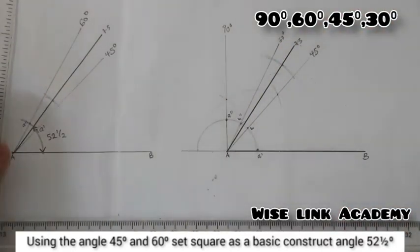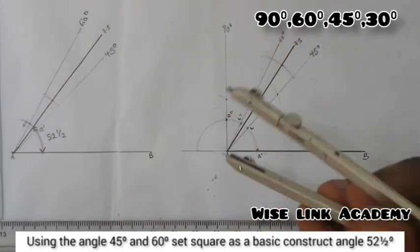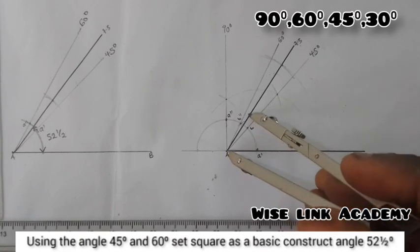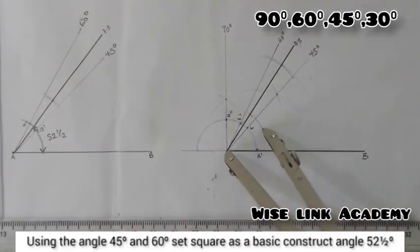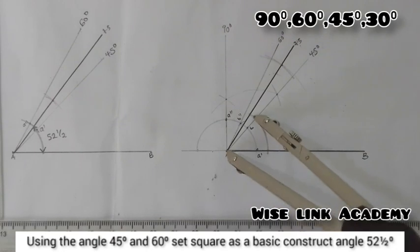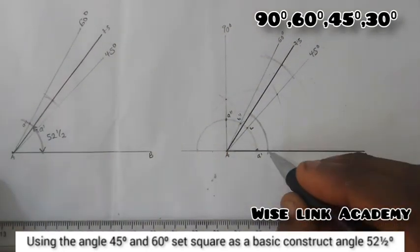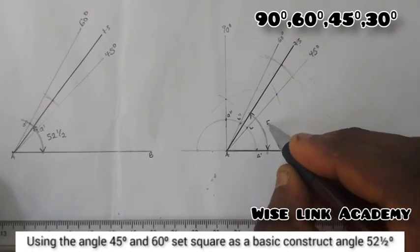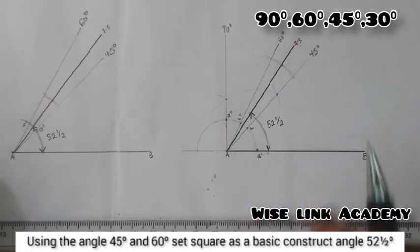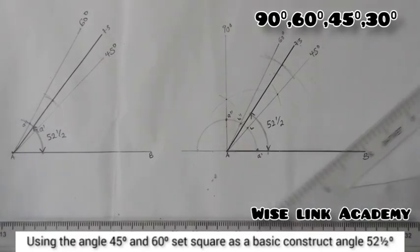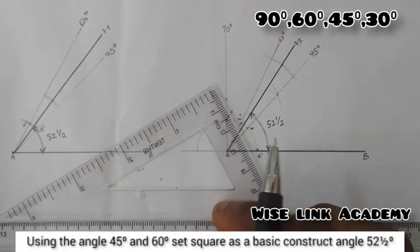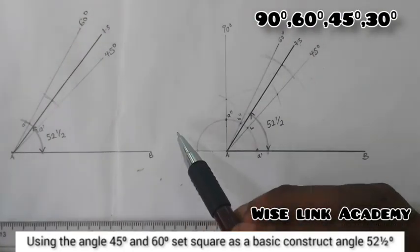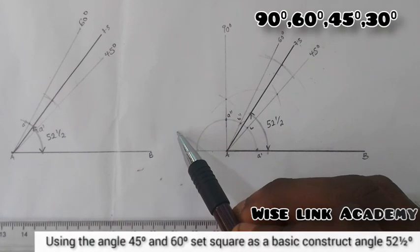So therefore the angle from this point here to this point is going to be 52 and a half. So if you have found this video helpful, kindly click on the subscription button and like. Thank you. Welcome to Wise Link Academy.